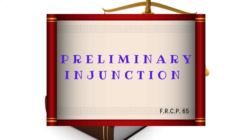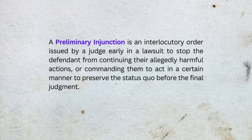So let's look at the preliminary injunction. You can find this at Federal Rules of Civil Procedure 65, and I will also include a link with additional, more detailed information about the preliminary injunction in the description of this video. A preliminary injunction is an interlocutory order issued by a judge early in a lawsuit to stop the defendant from continuing their allegedly harmful actions, or commanding them to act in a certain manner to preserve the status quo before the final judgment.